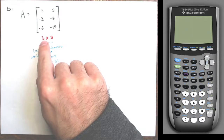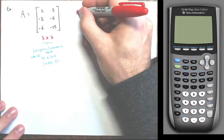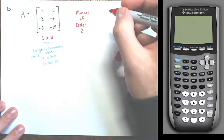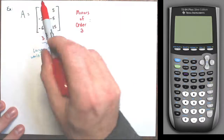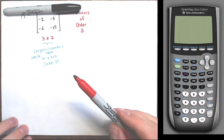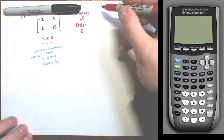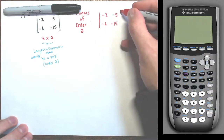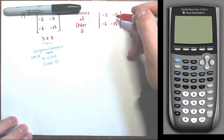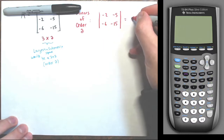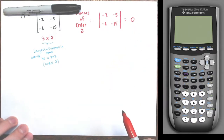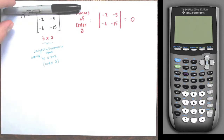This is a three by two, so in order to create a two by two submatrix I need to remove a row. Here are the minors of order two. If I remove the first row, I get a two by two submatrix with entries negative two, negative five and negative six, negative fifteen. Do you see how these rows are multiples of each other — multiply the top row by three and you get the bottom row. This determinant is zero: thirty minus thirty equals zero.